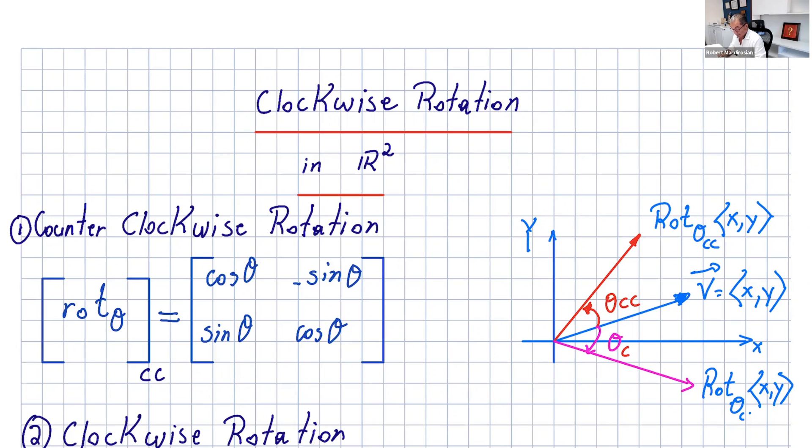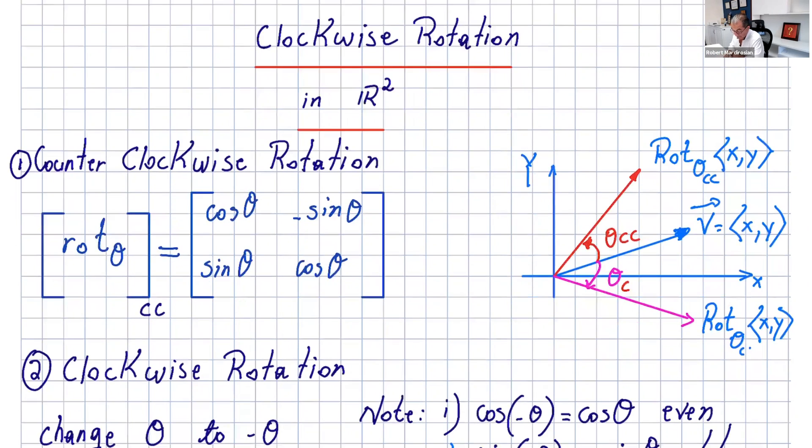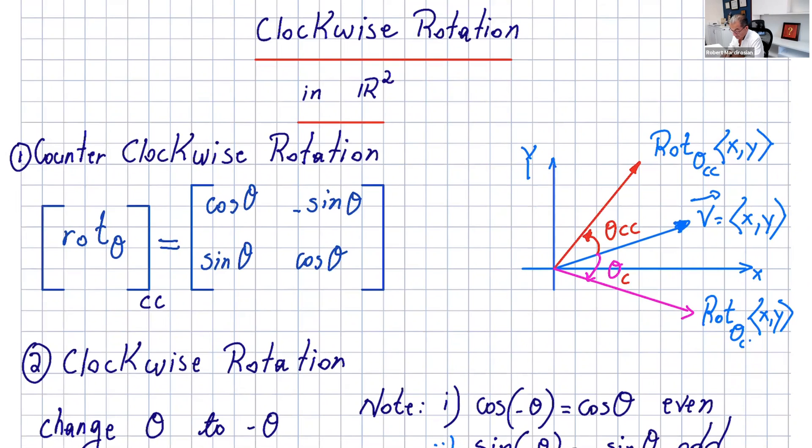In my last video, we found the matrix of the counterclockwise rotation, and that was the matrix cosine theta, negative sine theta, sine theta, and cosine theta.